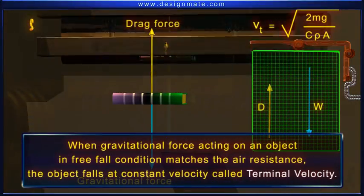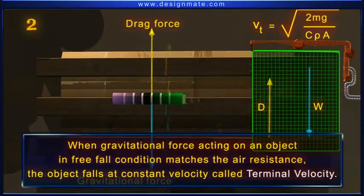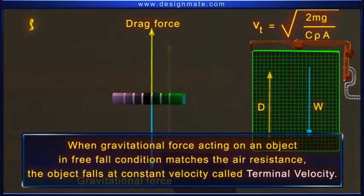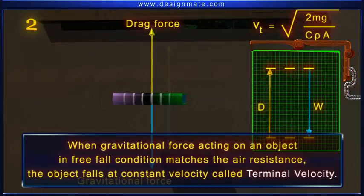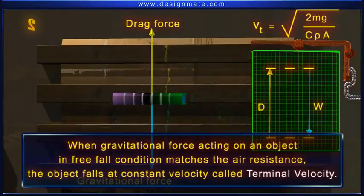When gravitational force acting on an object in free-fall condition matches the air resistance, the object falls at constant velocity called terminal velocity.